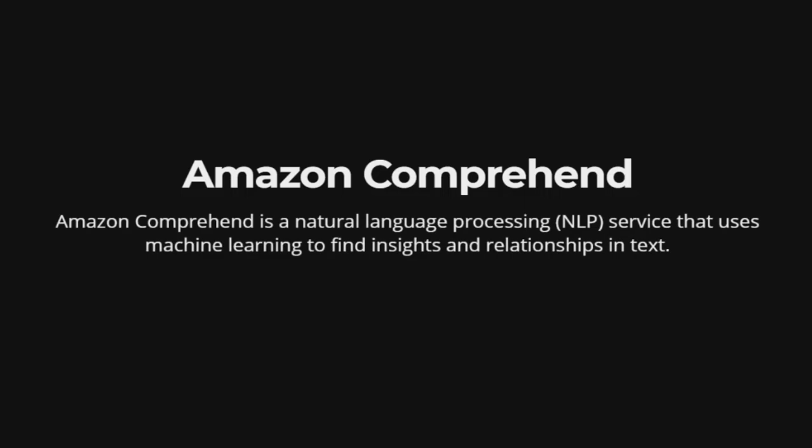Amazon Comprehend. Amazon Comprehend is a natural language processing, NLP, service that uses machine learning to find insights and relationships in text.